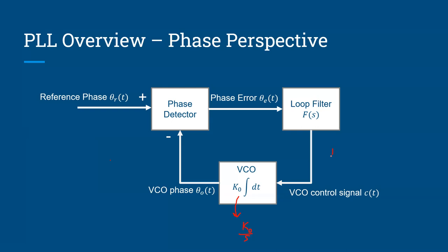The frequency of the VCO equals some fixed nominal frequency plus K₀ times the control input c(t). That gives the instantaneous frequency of the VCO. To get the VCO output phase, you integrate this with respect to time.